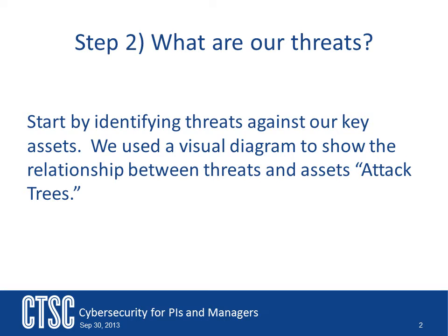For example, consider classroom computers which are secured to the desks. To steal one, the securing cable must be cut or the lock unlocked. The lock may be unlocked by picking or by obtaining the key. The key may be obtained by threatening a keyholder, bribing a keyholder, or taking it from where it is stored — that is, under a mouse mat. Thus, a four-level attack tree can be drawn, of which one path is: bribe keyholder, obtain key, unlock lock, steal computer.